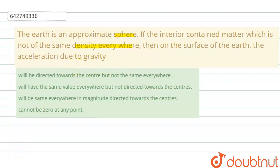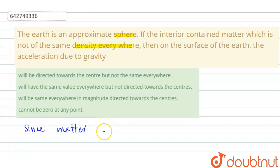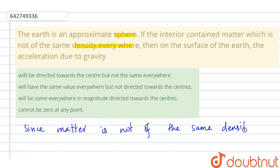If the density of the matter is not the same everywhere, then the center of mass may not be at the center of the sphere itself. If the density is different at every point, the center of mass may not lie at the geometric center of the sphere.